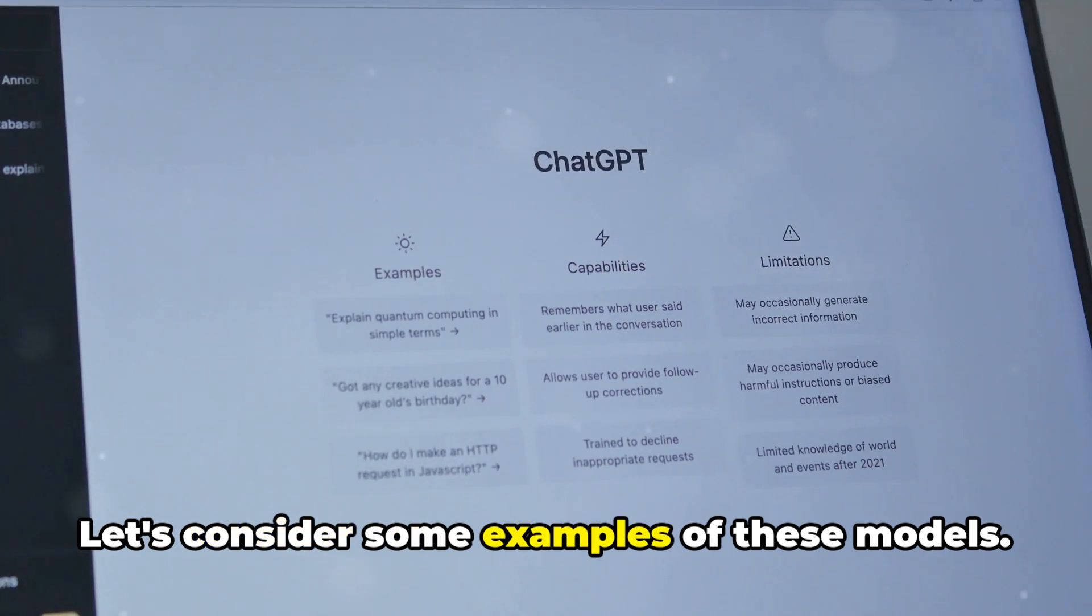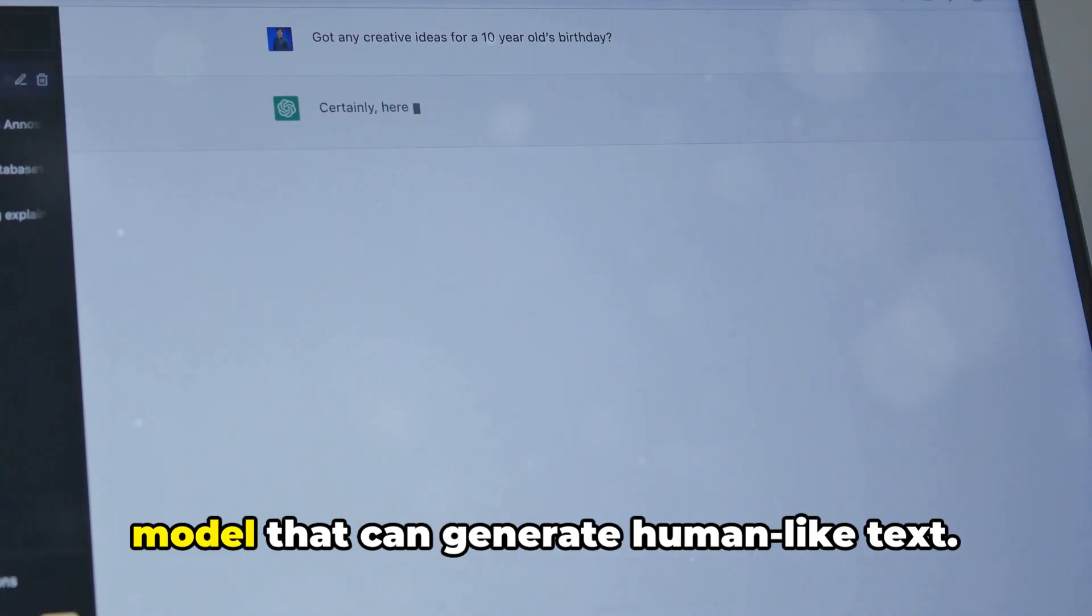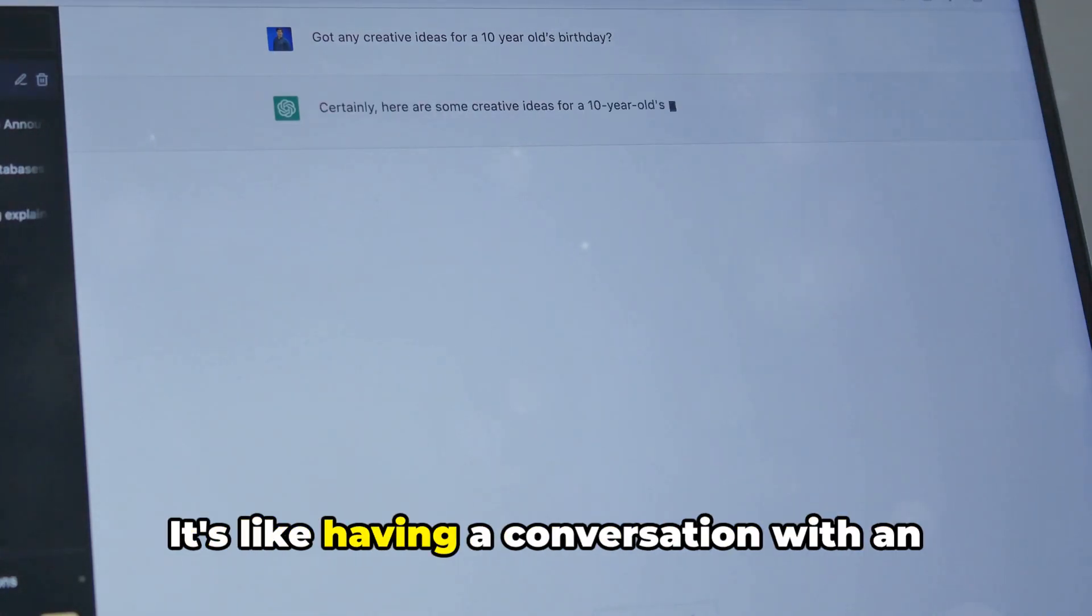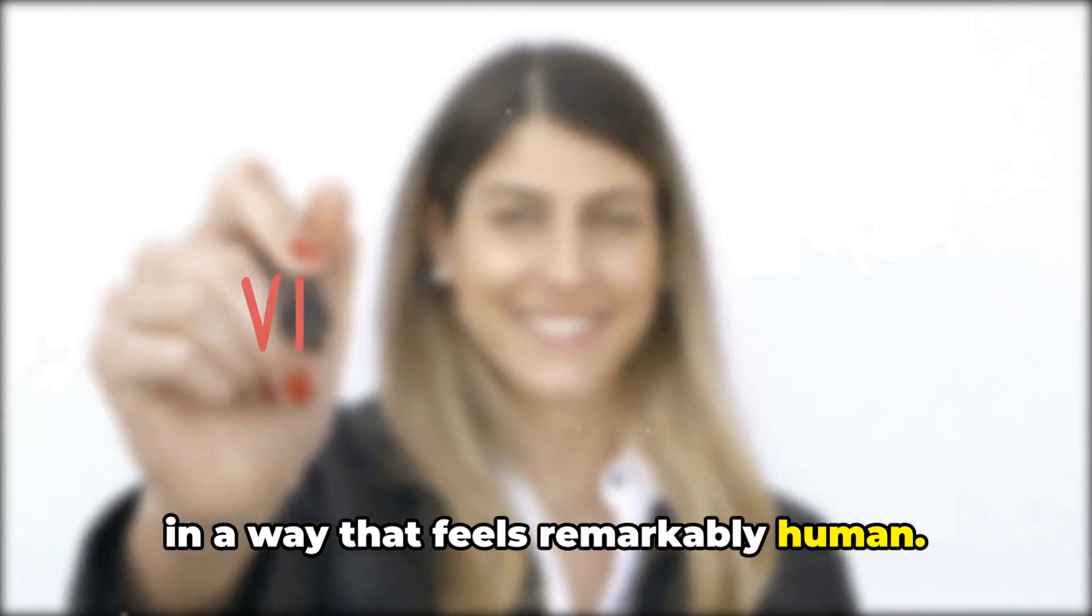Let's consider some examples of these models. One is ChatGPT, a language processing model that can generate human-like text. It's like having a conversation with an AI that can understand and respond to you in a way that feels remarkably human.